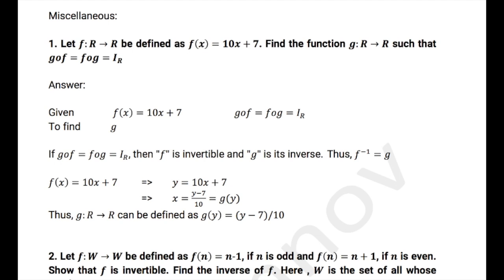Now, let us get into miscellaneous questions. The question is: the function is defined from R to R and f(x) = 10x + 7. We need to find a new function g such that g∘f = f∘g = identity.